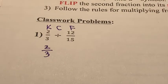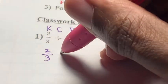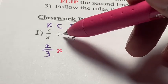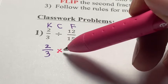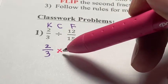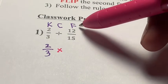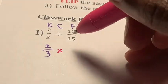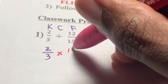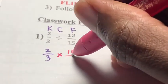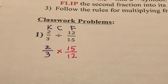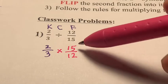We change the division symbol into a multiplication symbol — into its inverse, its opposite. And we're going to flip 12 over 15 into its reciprocal, which means that the denominator goes on top and becomes the numerator, and the numerator becomes the denominator. That's what reciprocal means — we're basically inverting the second fraction.